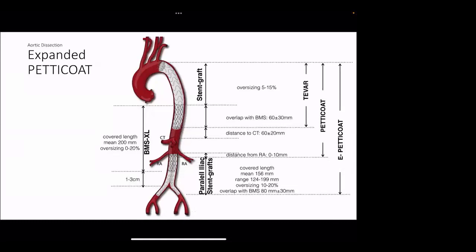From just a few months ago, there are additional efforts to further evolve this petticoat approach — called the expanded petticoat technique. It involves initial placement of bare metal stents through the visceral segment, followed by placement of overlapping stent grafts. The authors advocate stent grafts distally extending to approximately 6 to 10 centimeters above the celiac, with additional kissing iliac stents into the infrarenal segment. This further refinement aims to address the false lumen comprehensively so patients aren't left with a pressurized false lumen and need for numerous re-interventions.